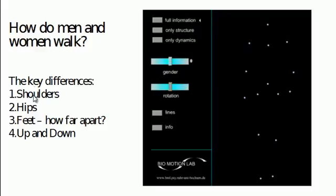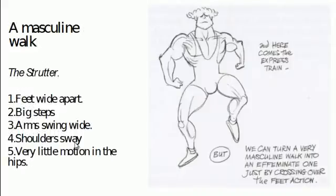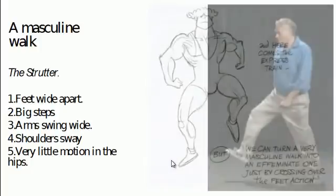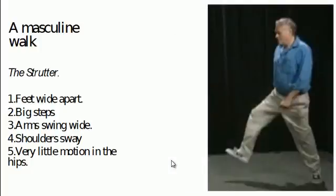But these are the key differences: shoulders, hips, how wide the feet are apart, and how much up and down motion there is. Here's a caricature of a masculine walk, taken from the Animator's Survival Kit. This is a kind of strutting character — feet wide apart, taking big wide steps, arms swinging wide, shoulders swaying a lot, but very little hip motion. The more you add hip motion, the more it starts to become like a feminine walk.